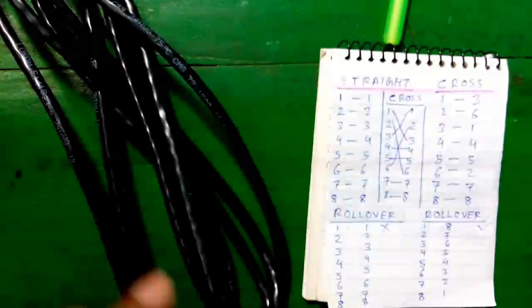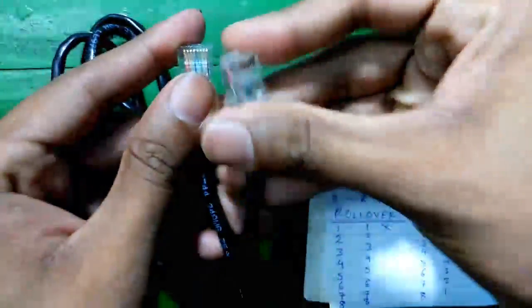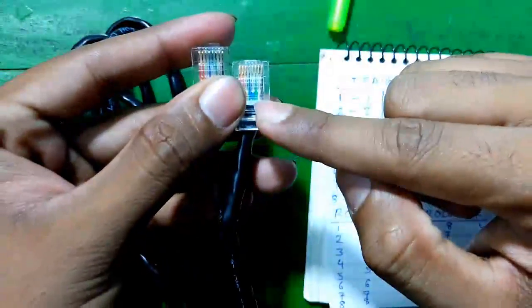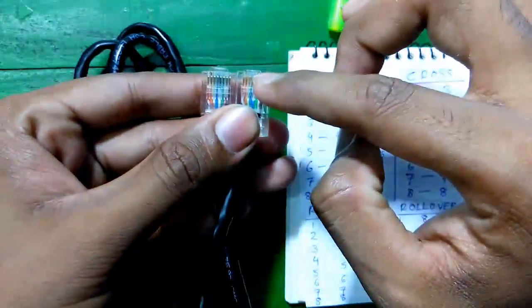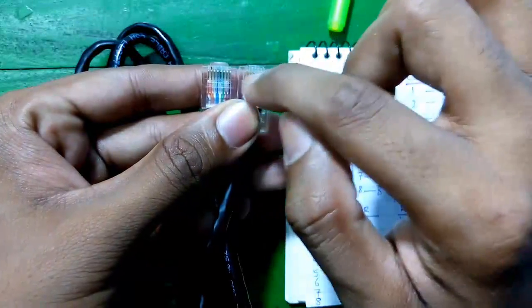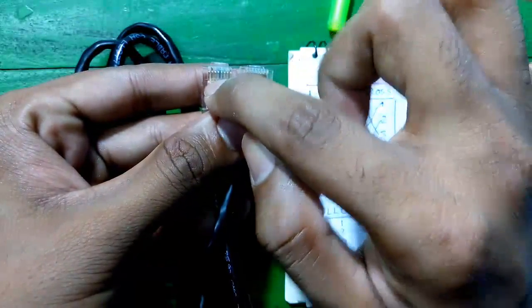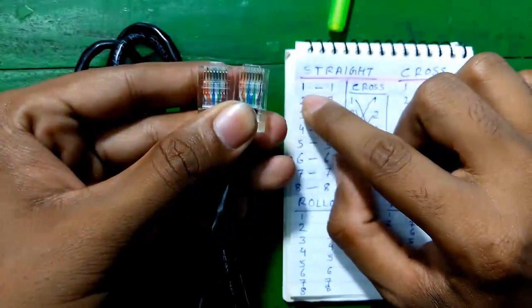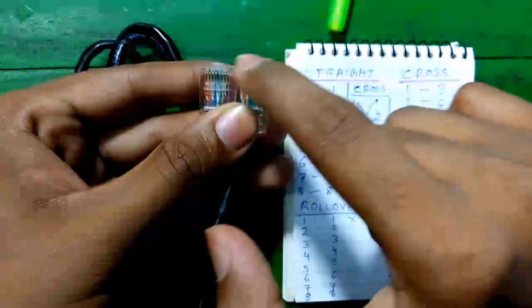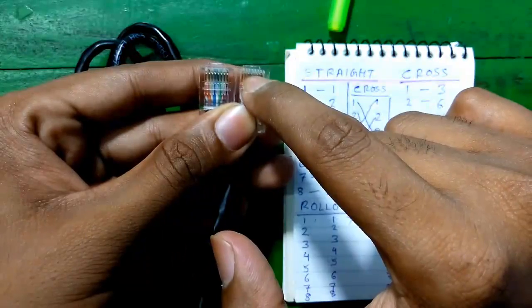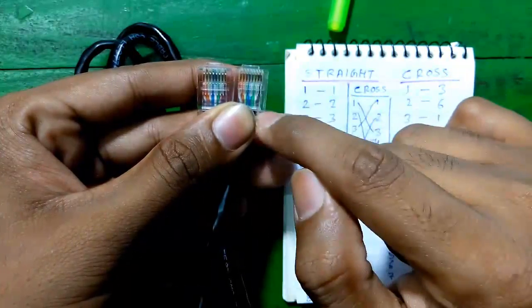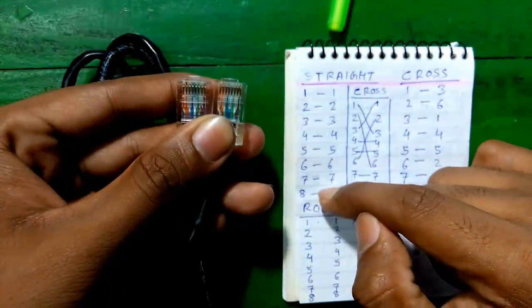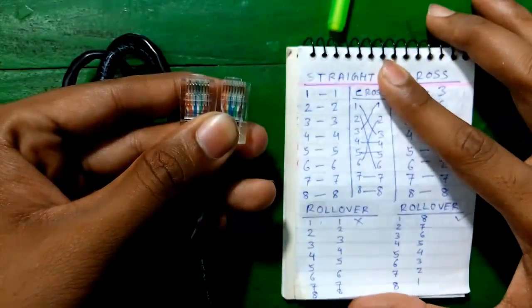This is called a straight UTP cable. So in straight cable, since it has RJ45 connector, it has eight pins. This is called the connector and this is the cable. So it is called straight cabling because it is one to one connectivity. So there are eight pins on each connector. Straight cabling means the connectivity is one to one. So pin one of this connector is connected to the pin one of the other connector. Similarly, pin two of this connector is connected to pin two of this connector and so on for all the eight pins.